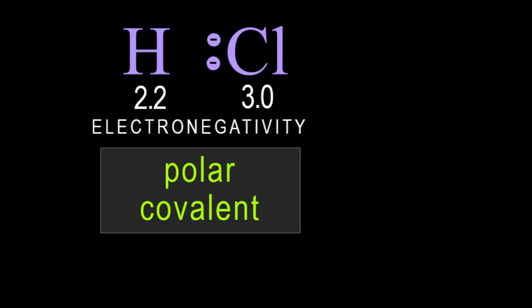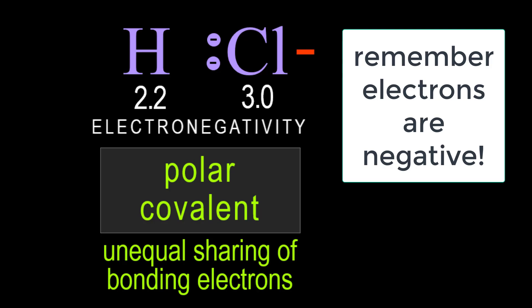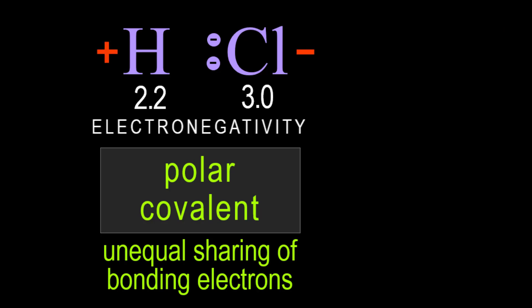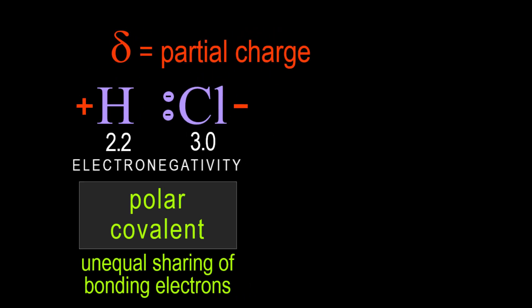The word polar refers to this polarity, the unequal sharing of electrons. The chlorine acquires a partially negative character due to the shared electrons spending more time at the chlorine, and the hydrogen therefore acquires a partially positive charge. The Greek letter delta tells us it is a partial charge, and so we say the hydrogen is delta plus, the chlorine is delta minus.